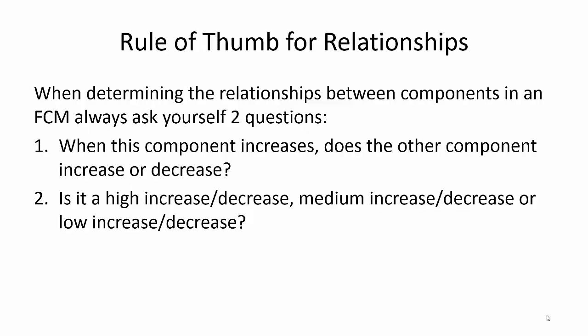The rule of thumb for creating a fuzzy cognitive map is to think about two different things. One, when you define the components, it has to be a component that can increase or decrease. And when you relate it to another component through an arrow, you think about whether it's a high, medium, or low increase or decrease, and you parameterize that — moving from a qualitative description to any value between positive 1 and negative 1.